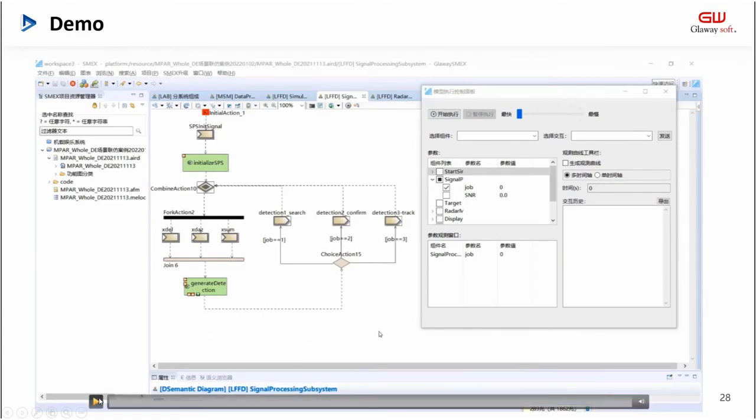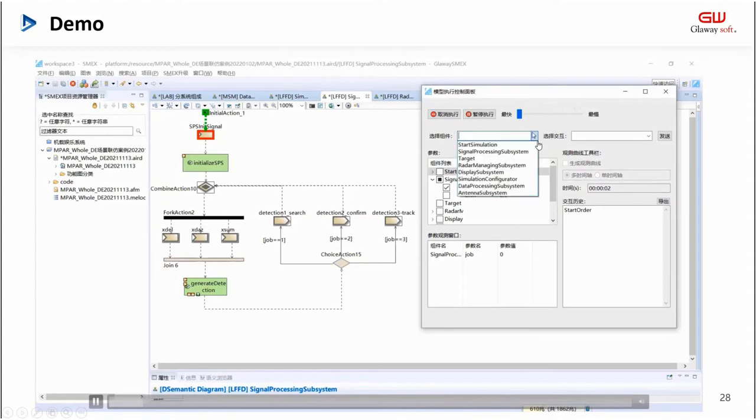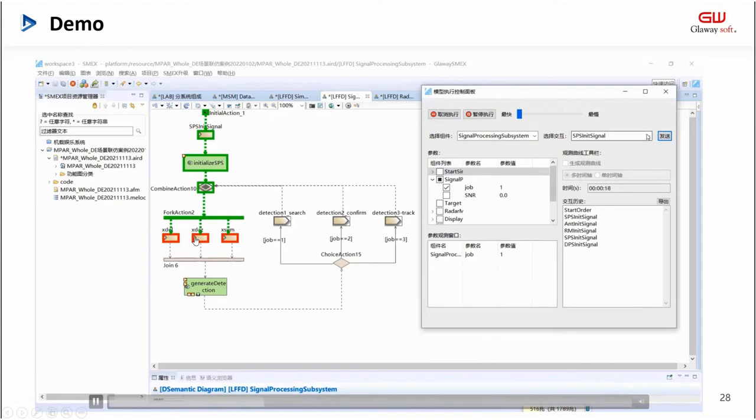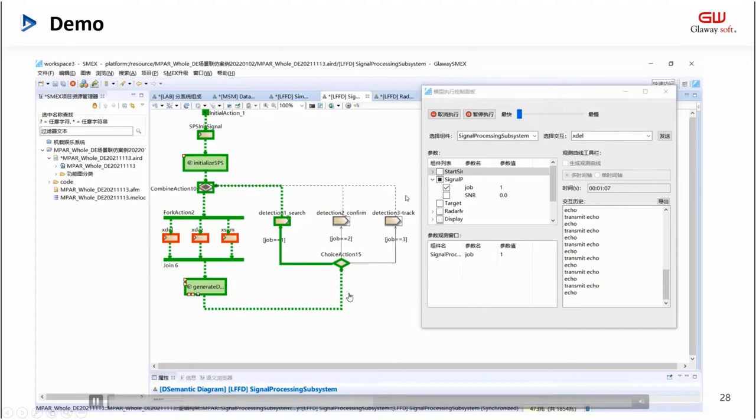This video shows the simulation ability of the activity diagram. After the simulation starts, the execution of the activity diagram is triggered by manually selected signals. Then Capella calculates the value of drop and it will choose the way. Then start the next cycle.